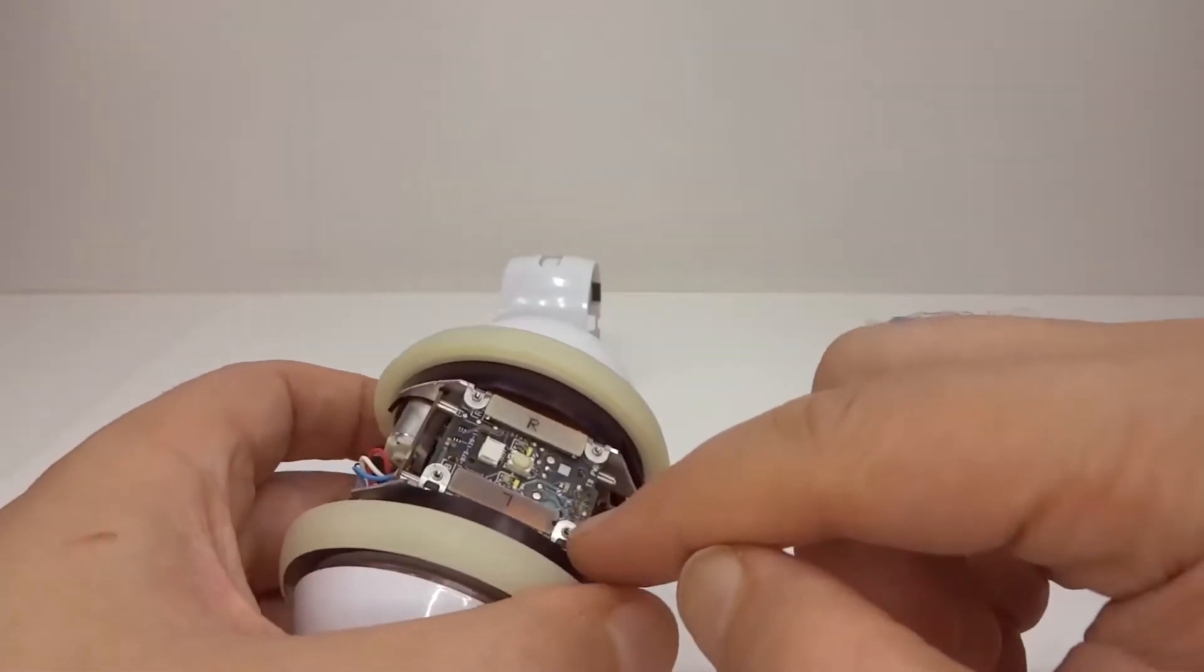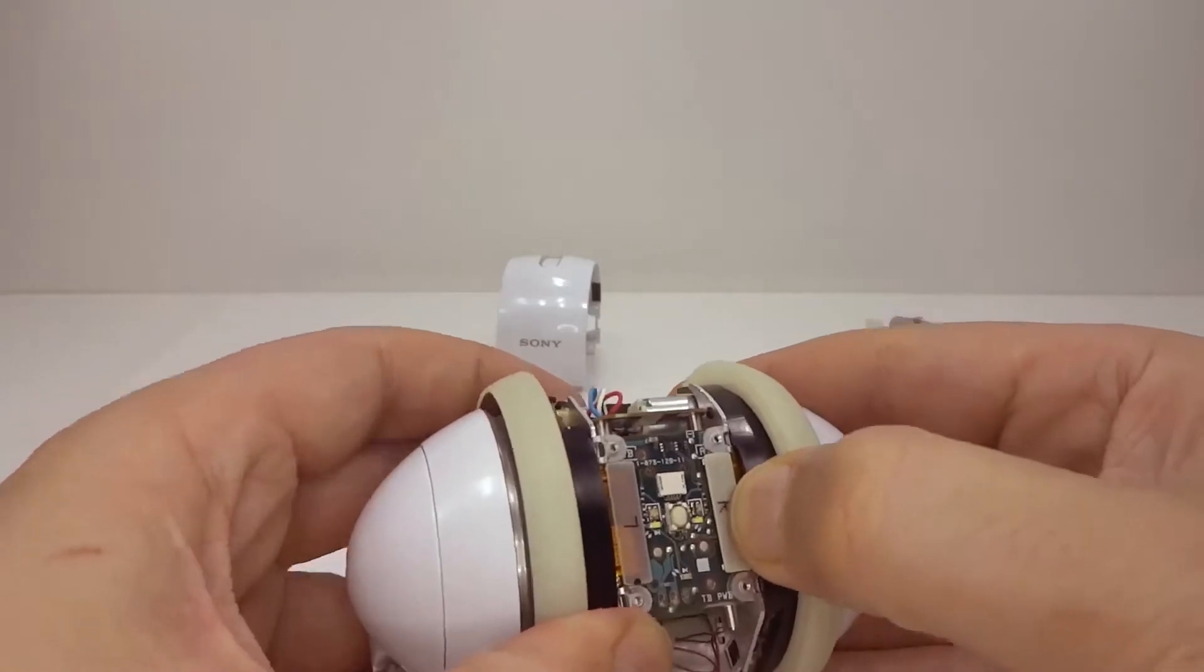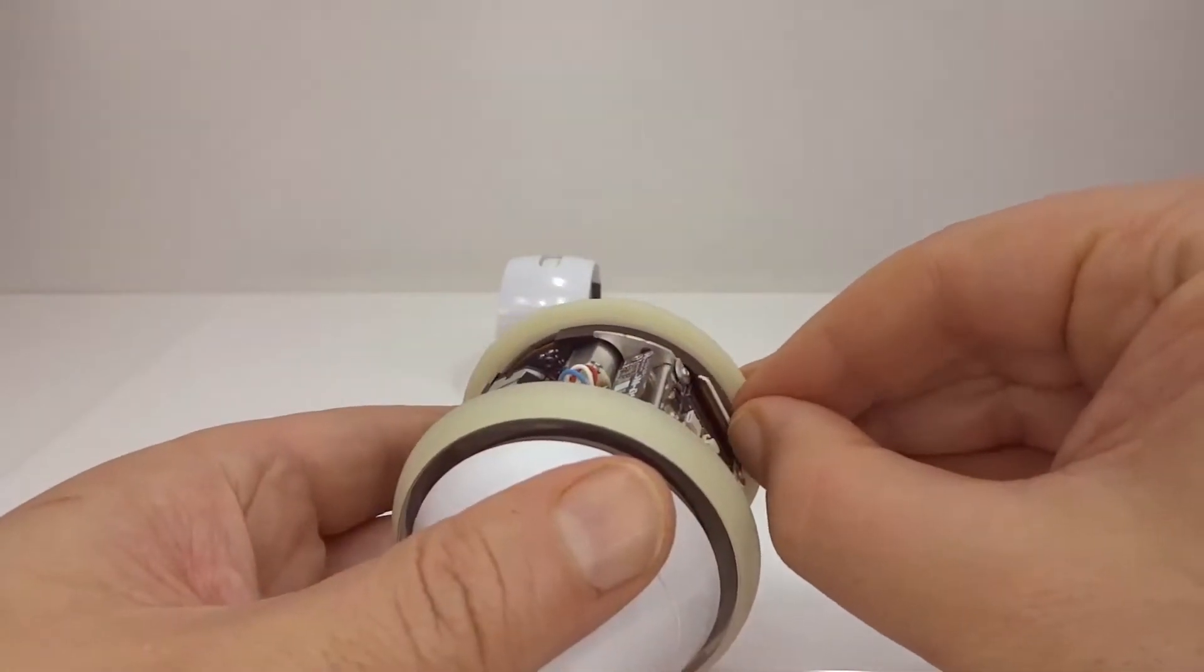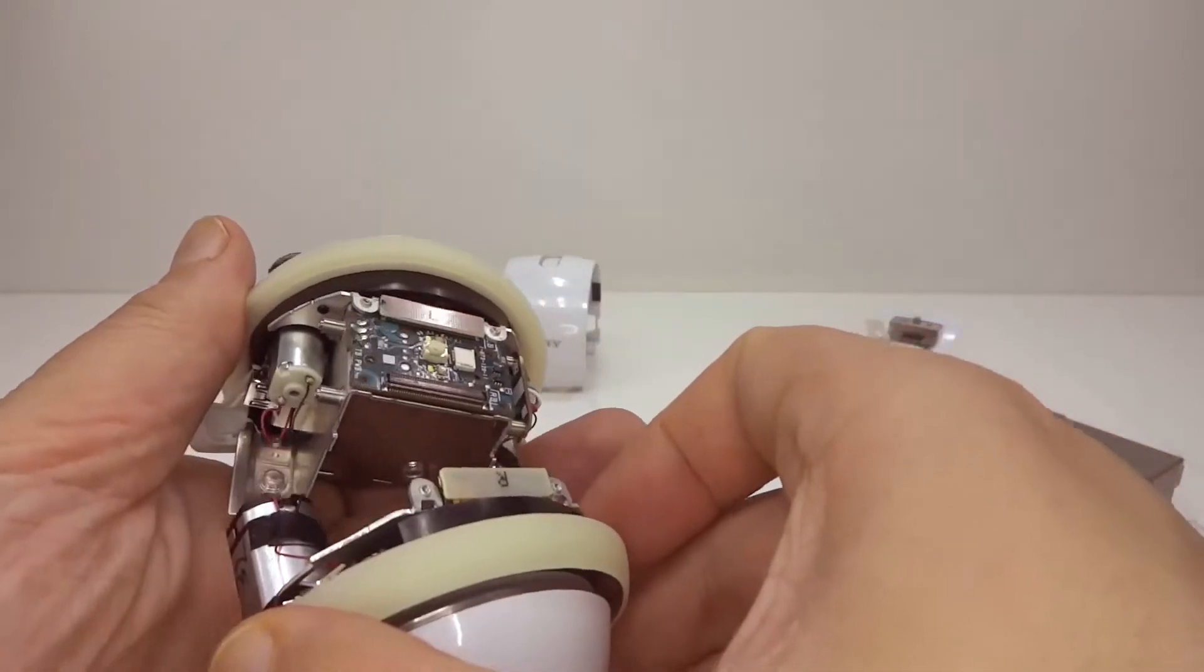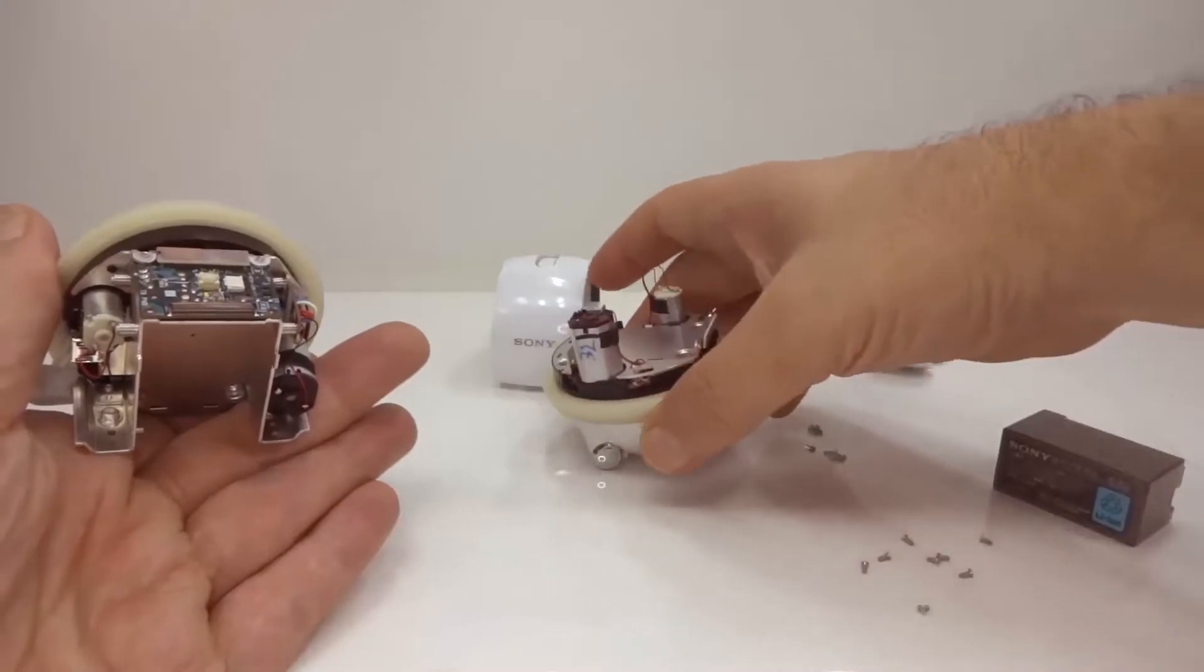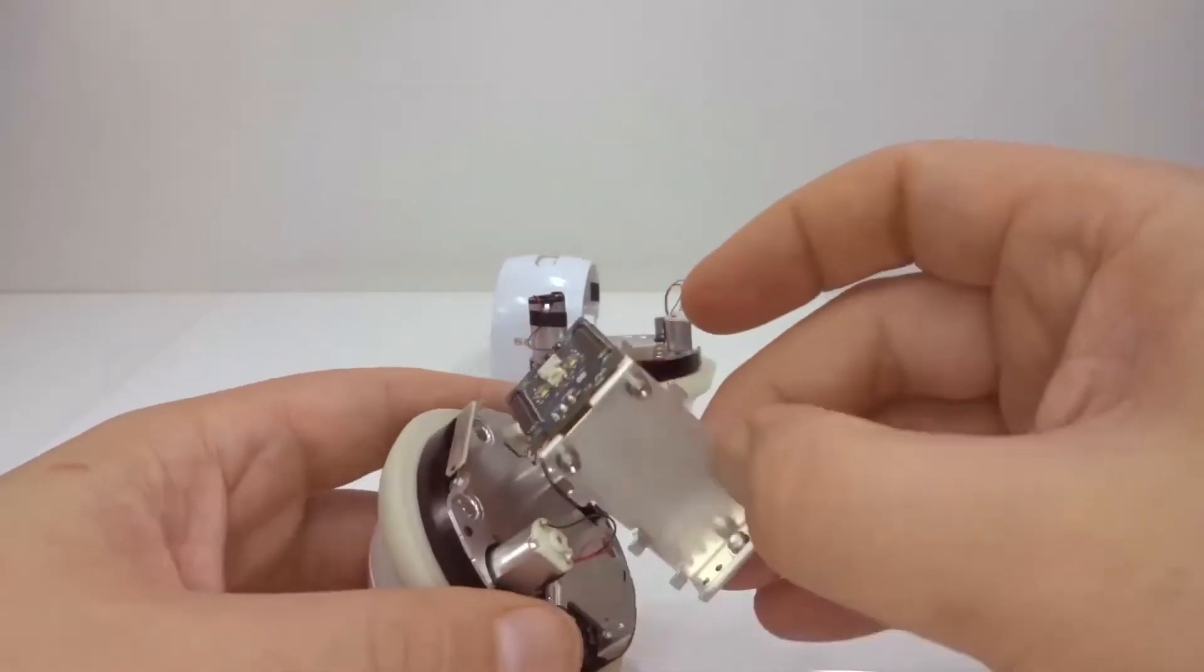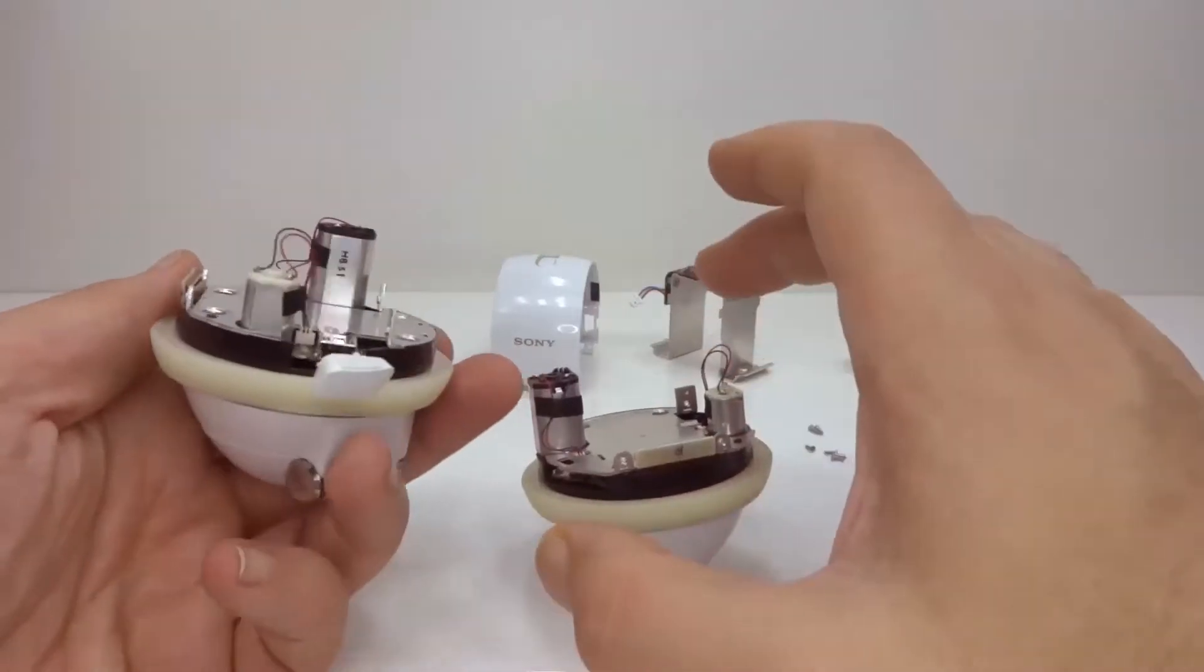Okay, so with those screws out, we're going to just very carefully disconnect. Okay so, one side. There's the midsection. Now we've got two halves.